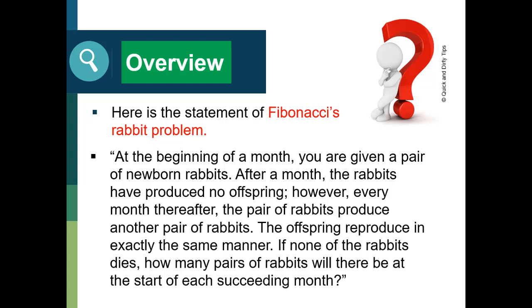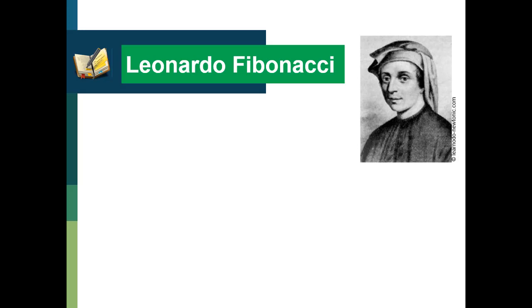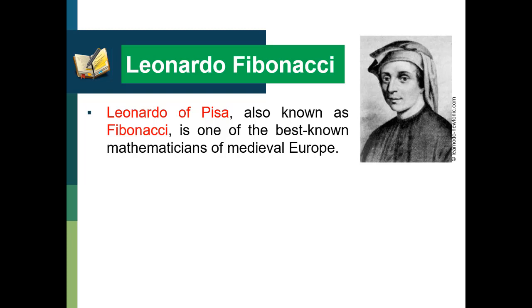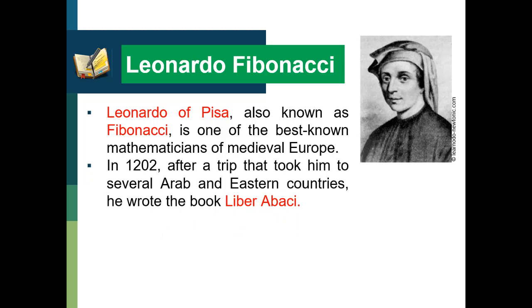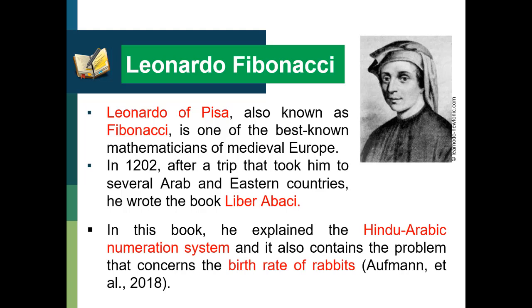Can you find an answer to this rabbit problem? Later on, we will explore that the answer will come up to the famous Fibonacci sequence. Let us be acquainted first with who is Leonardo Fibonacci. Leonardo Pisa, also known as Fibonacci, is one of the best-known mathematicians of medieval Europe. In 1202, after a trip that took him to several Arab and Eastern countries, he wrote the book Liber Abasi. In this book, he explained the Hindu-Arabic numeration system, and it also contains the problem that concerns the birth rate of rabbits — the famous rabbit problem.